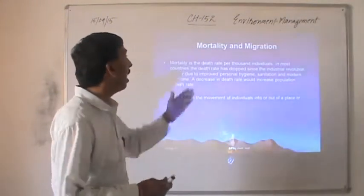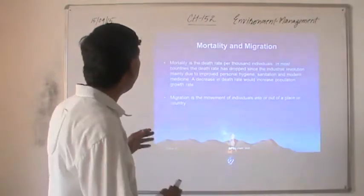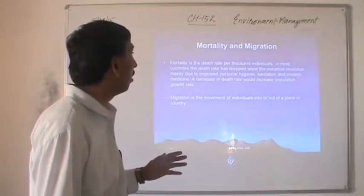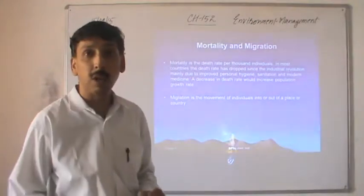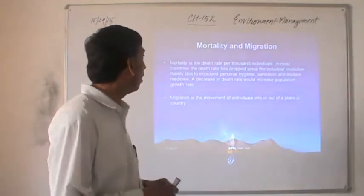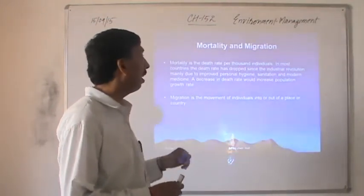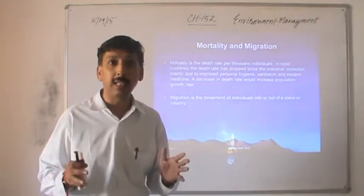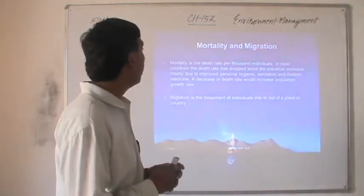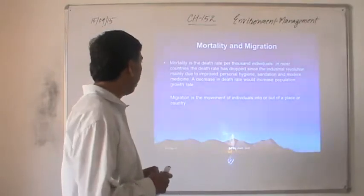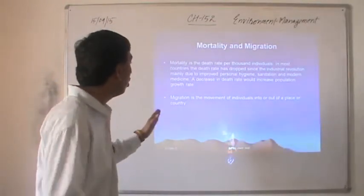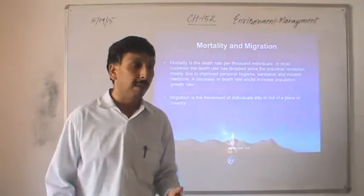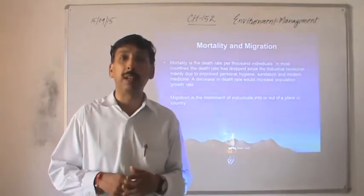The next factor is mortality and migration. Mortality is the death rate per thousand individuals. In most countries the death rate has dropped since the industrial revolution, mainly due to improved personal hygiene, awareness towards sanitation, and modern medical science. A decrease in death rate increases the population growth rate. Migration is the movement of individuals into or out of a place or country, which results in the increase in population of the place where people migrate to.